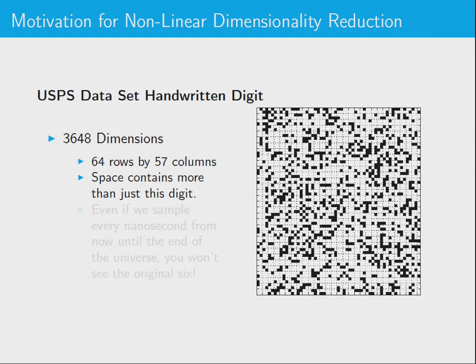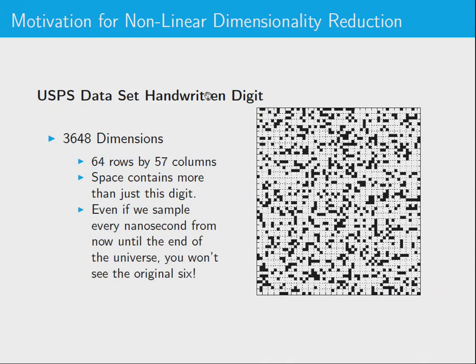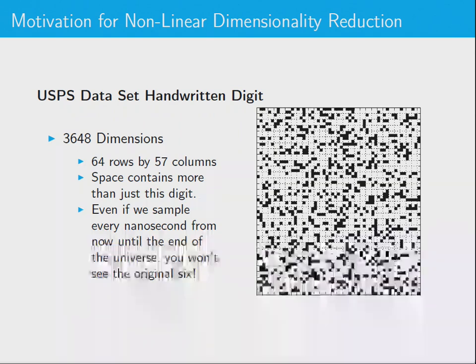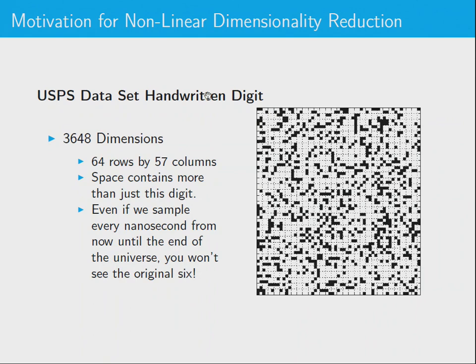That is a pre-sample. But even if you sample every nanosecond from now until the end of the universe, you would never see the original six. The reason being is because there's 2 to the 3,648 possible images in there, which is such a large number because the 3,648 is in the exponent, that you're never going to see that six again. In fact, you'll never see anything that looks like that six. So that tells you it's a pretty dumb way to model a six. Because that space could be anything, it could be a picture of one of you, not a very high-resolution picture, but it could be.